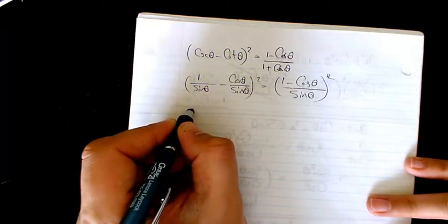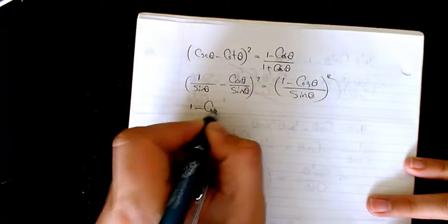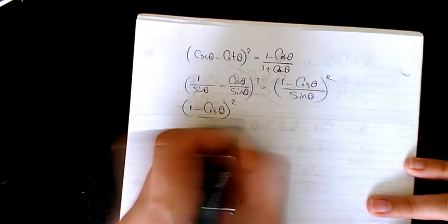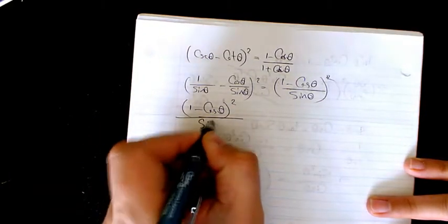Then I will have 1 minus cosine squared divided by sine squared.